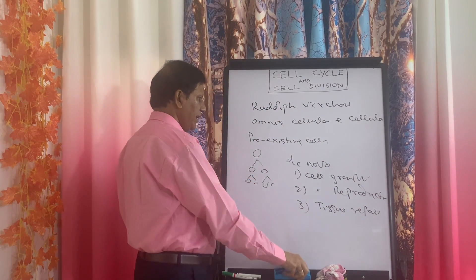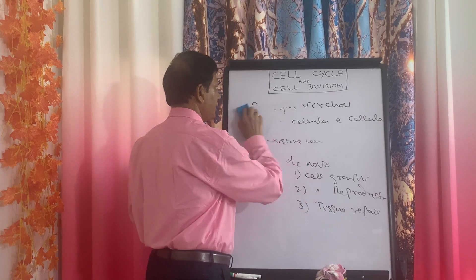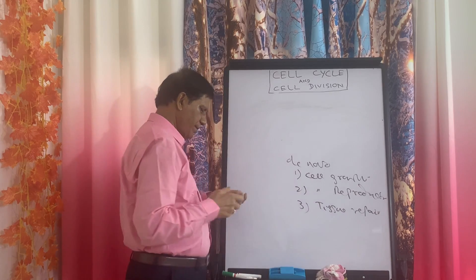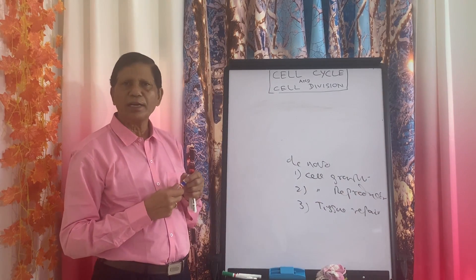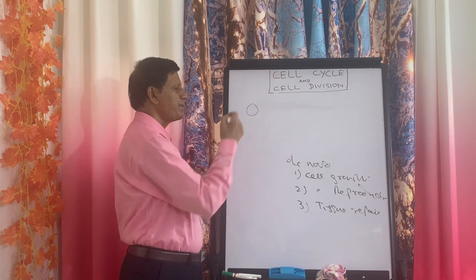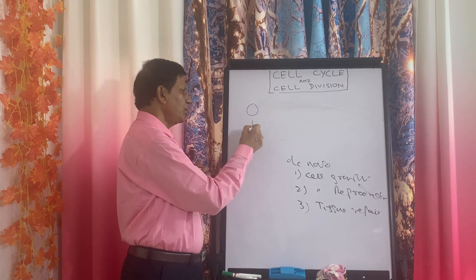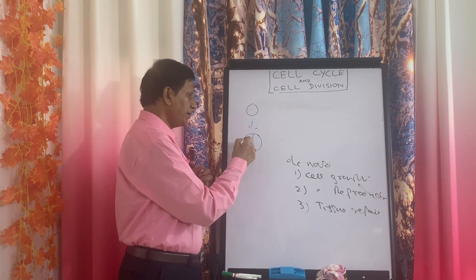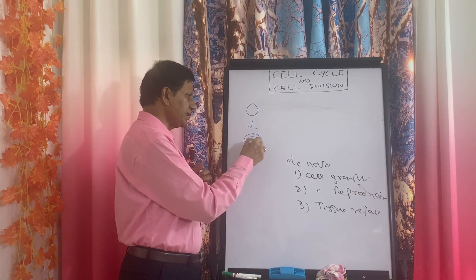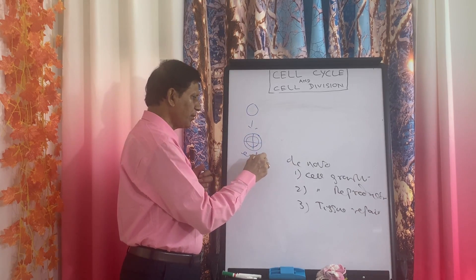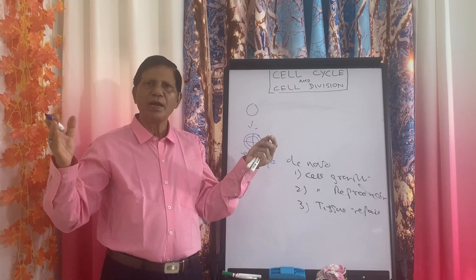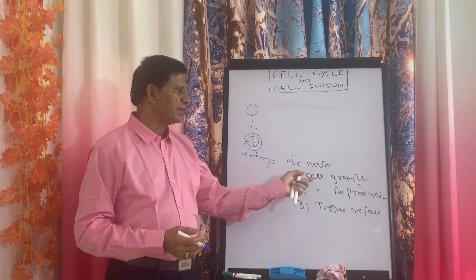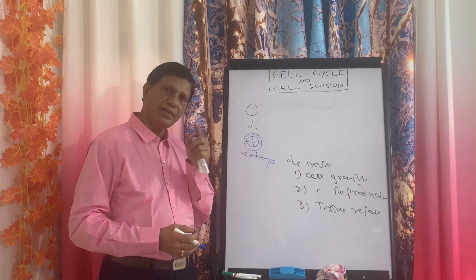Cell growth is one of the characters of all living organisms. The life cycle of all multicellular organisms starts from a single cell — the zygote. This zygote divides into two cells, then four, then eight, sixteen cells, giving rise to an embryo. From this embryo, the full organism develops, having millions and billions of cells. That is known as cell growth, and this growth takes place because the cell divides.